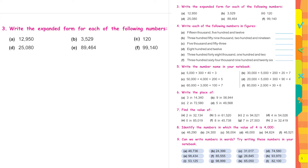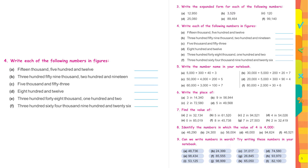Question 4: write each of the following numbers in figures — they are given in words and we have to write them in figures. Fifteen thousand five hundred and twelve is written as 15,512. Three hundred and fifty-nine thousand two hundred and ninety-two: three-five-nine, two hundred and ninety-two...